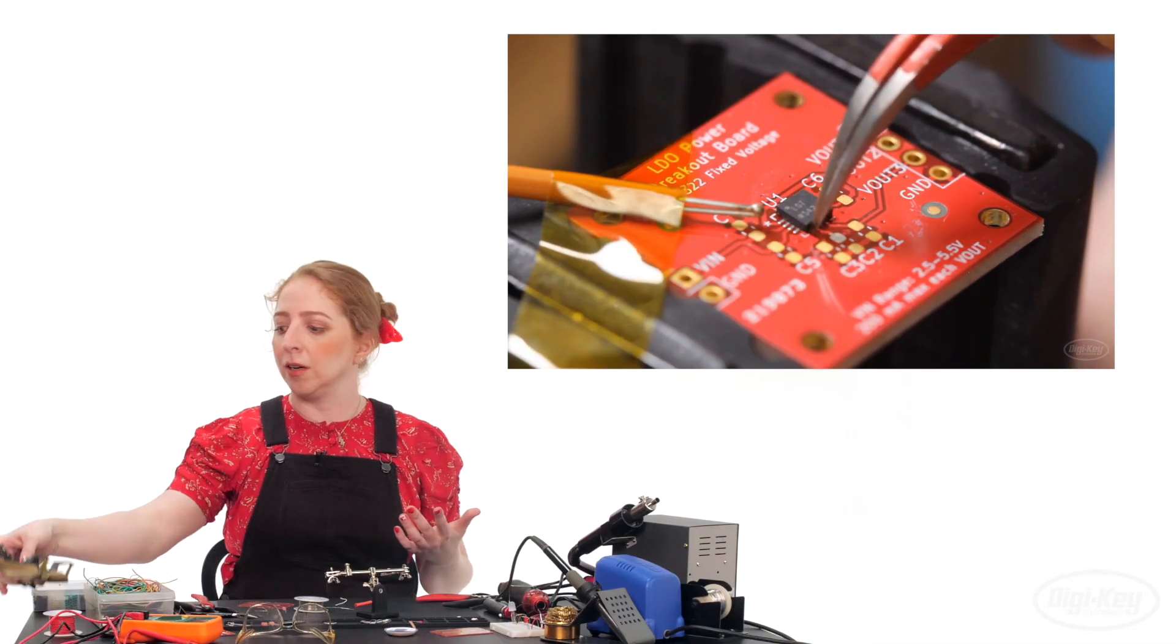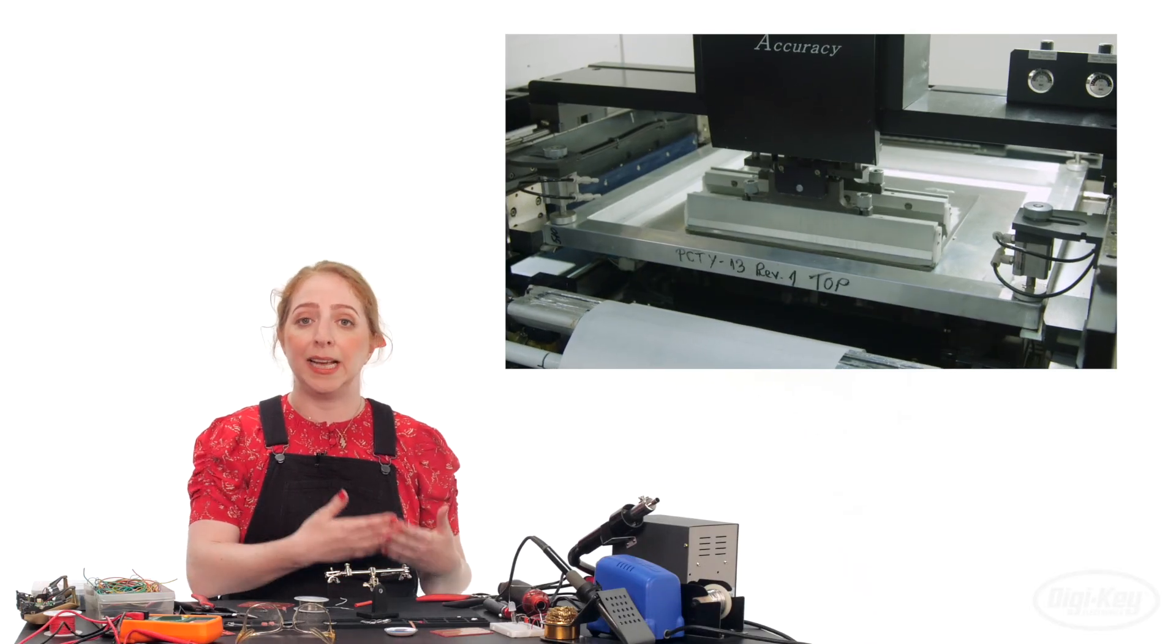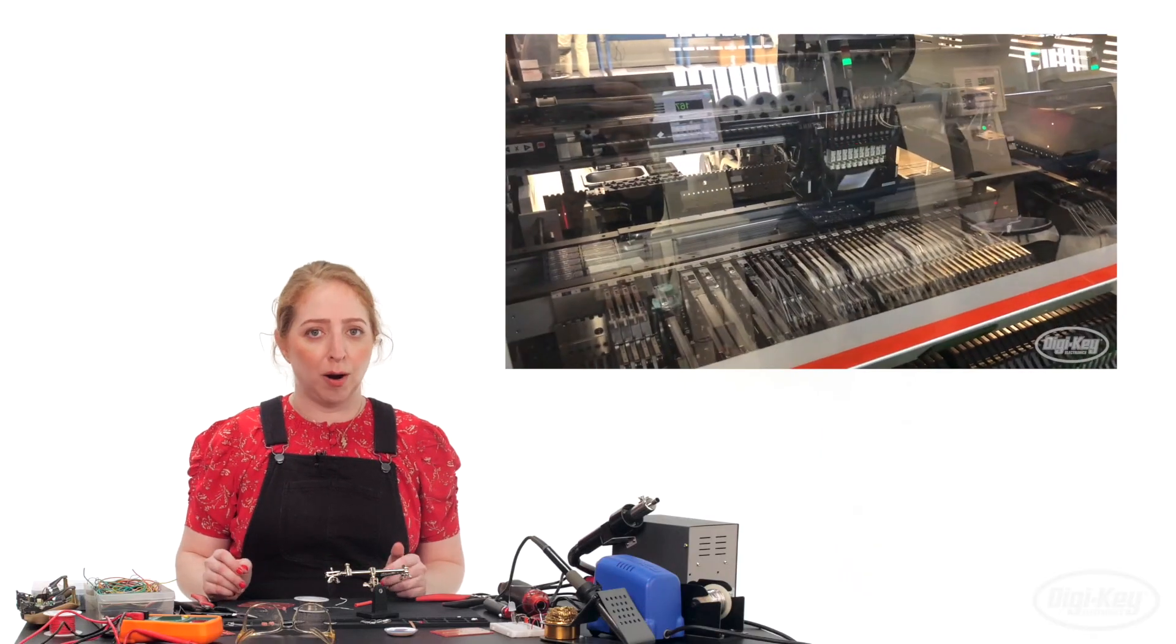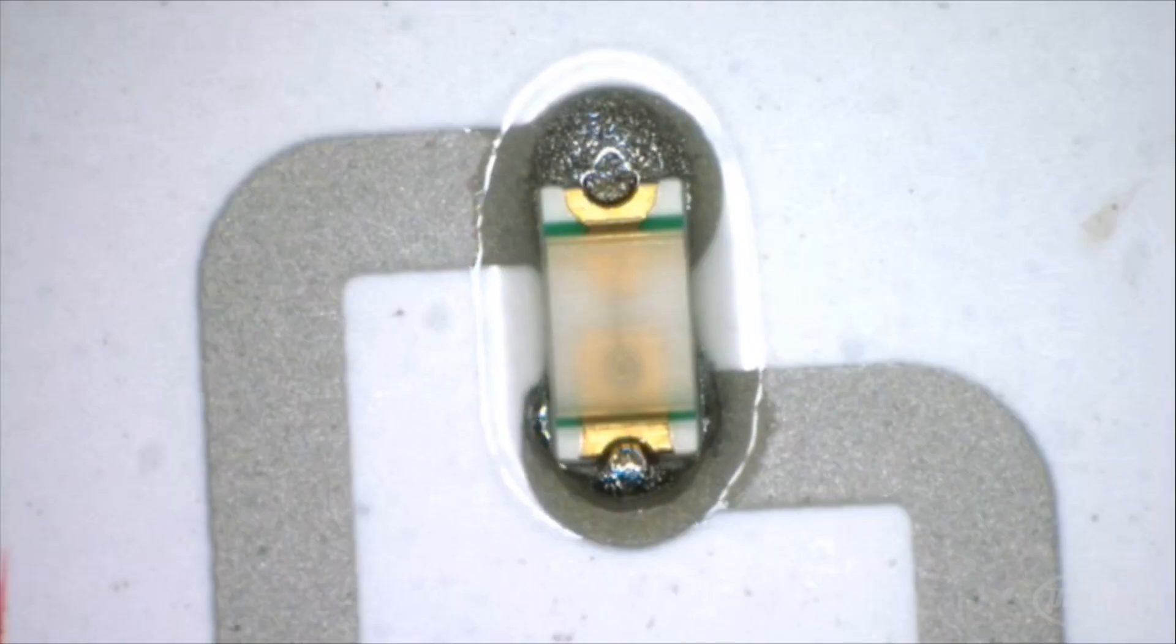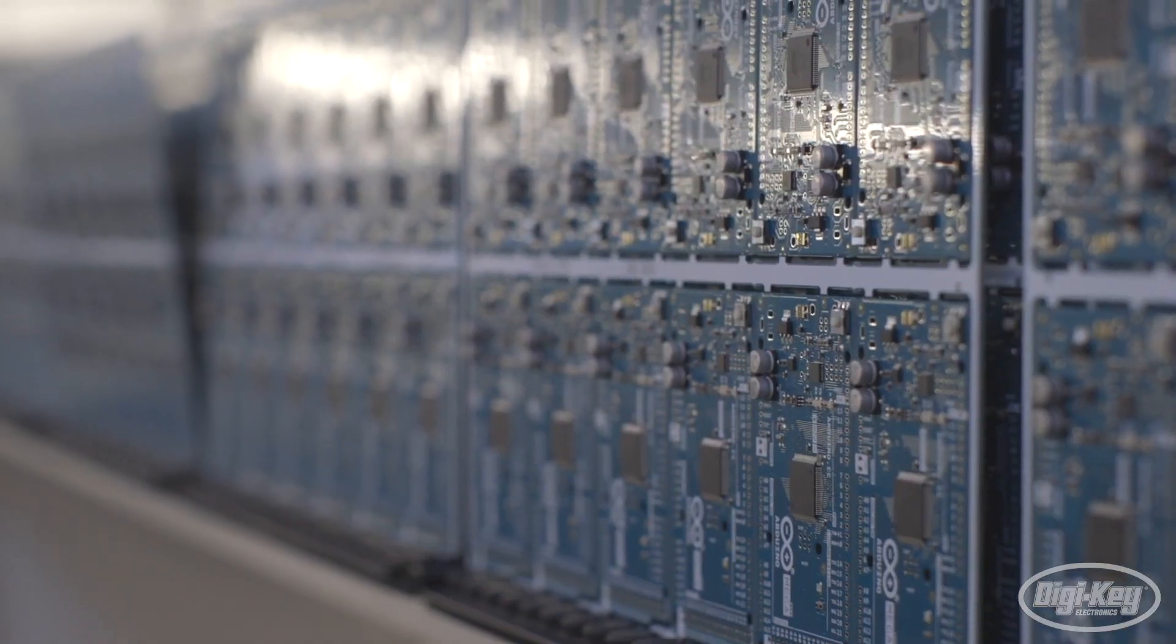So for surface mount components, there's a robotic process that starts with a stencil to apply the paste solder, followed by a pick and place machine that puts down the parts, then a solder reflow oven that bakes the whole circuit to just the right temperature to allow the solder paste to liquefy and make all of the connections.